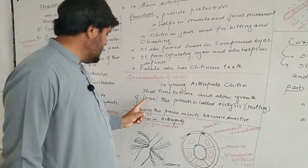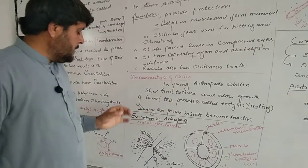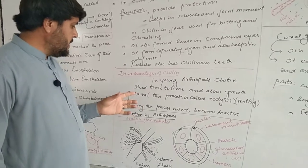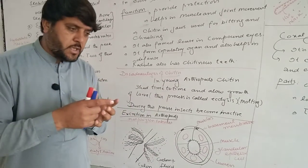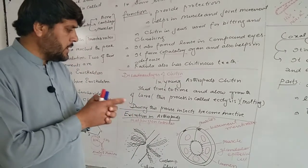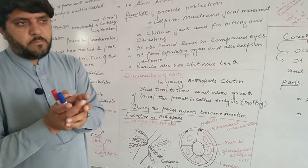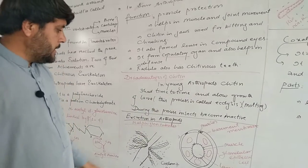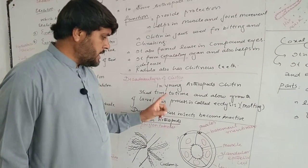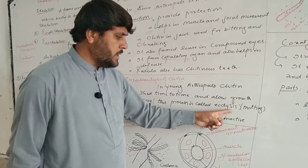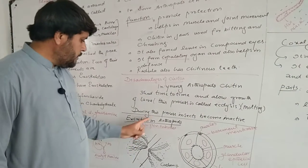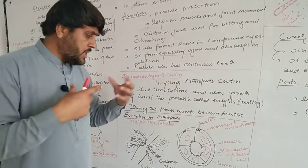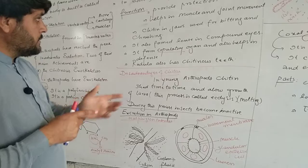There are advantages and disadvantages of chitin. In young arthropods, chitin is shed time to time to allow growth of larvae during metamorphosis. The disadvantage is that during this process of molting, insects become inactive.